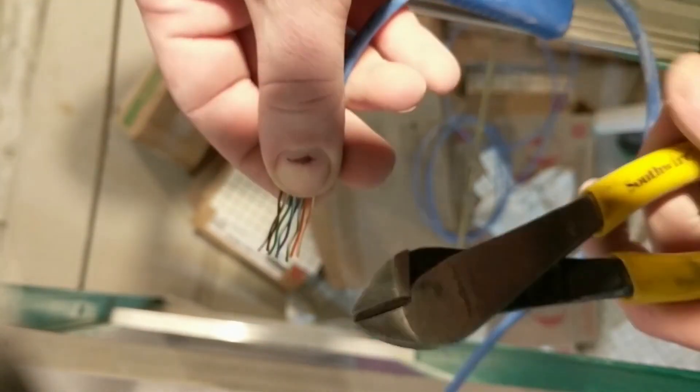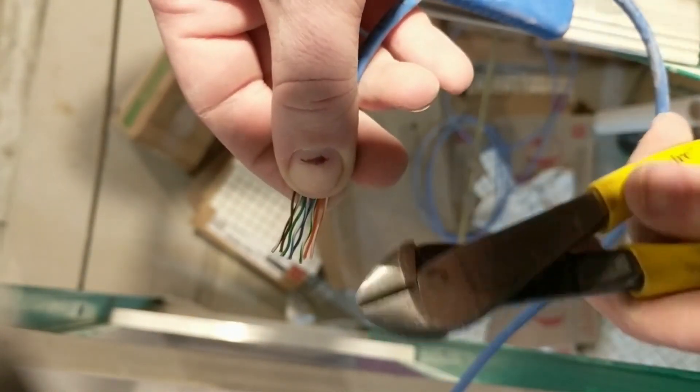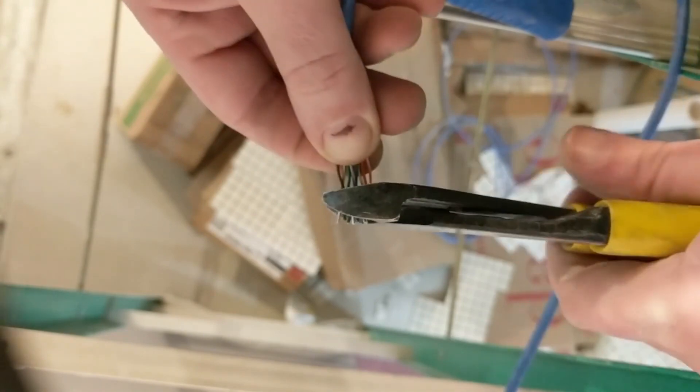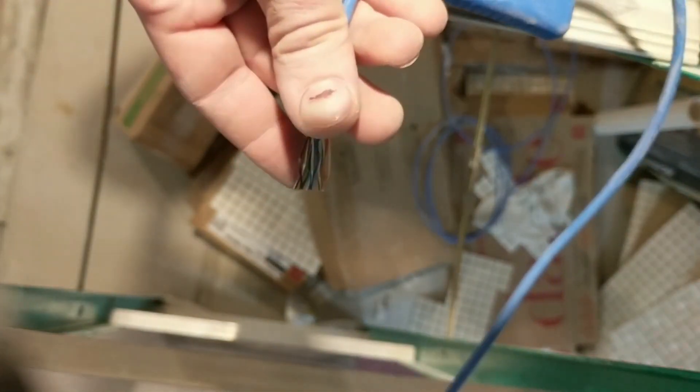And then because after untwisting they're going to be different lengths, I always take a cutting tool like this and just cut the ends off. So they're all nice and smooth and set together.